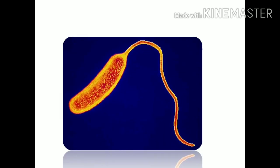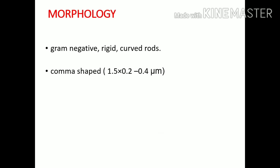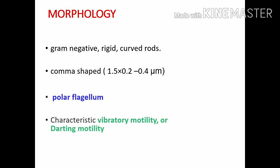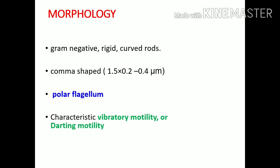Cholera is caused by Vibrio cholerae, which is a gram-negative bacillus with polar flagella and is curved — comma-shaped. This bacteria displays a specific motility called vibratory motility, which is why it is named Vibrio. It also shows darting motility — meaning the bacteria appears at one position and then very rapidly moves to a different position. It is extremely fast and motile, like twinkling stars.